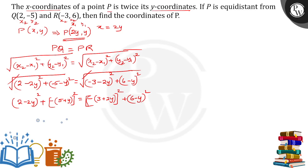If I do simplification, (2-2y)² means 4 + 4y² - 8y plus 5² is 25 + y² + 10y is equal to (3+2y)² means 9 + 4y² + 2 times 3 times 2y, it will become 12y plus (6-y)² is 36 + y² - 12y.